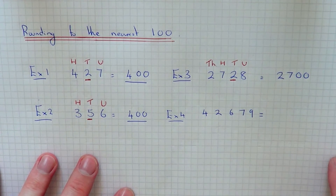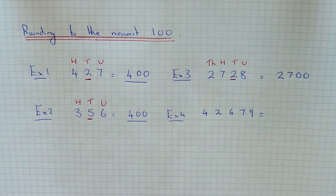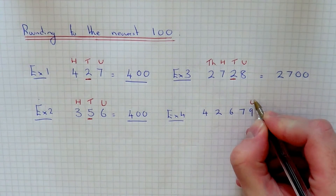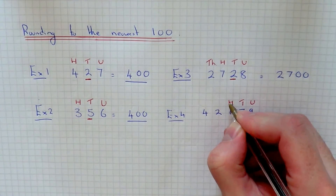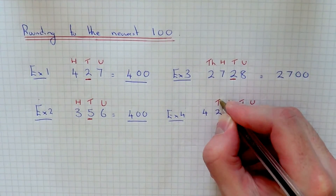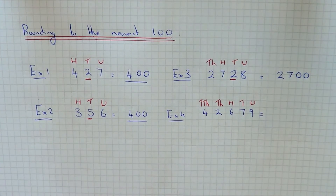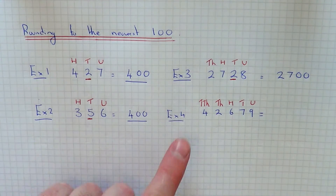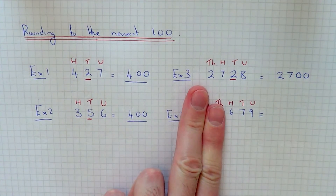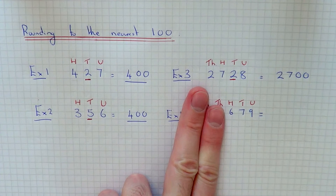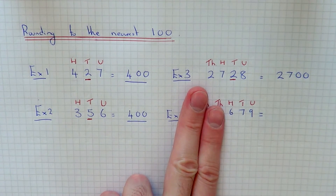So let's have a look at example four, our final example. This time we have 42,679. If we label up our columns, we have 9 units, 7 tens, 6 hundreds, 2 thousands, and 4 tens of thousands. We're just looking at the last three digits because we're rounding to the nearest hundred, so we can cover up the first two columns. We've got 679. Looking at the hundreds column, we have 600 at the moment. If we round it down, the answer will be 600; if we round it up, that'll be 700.